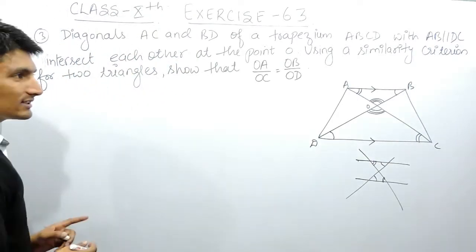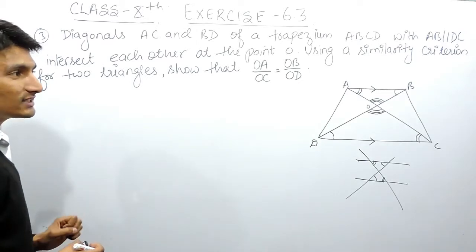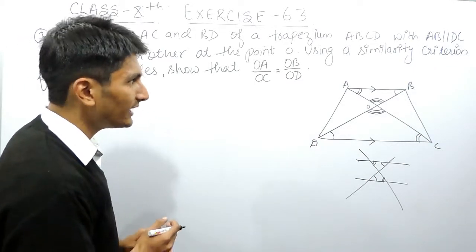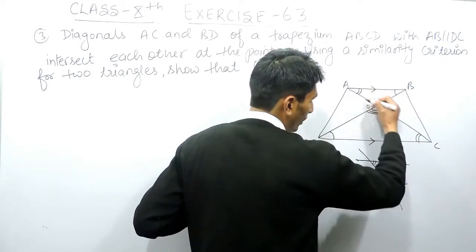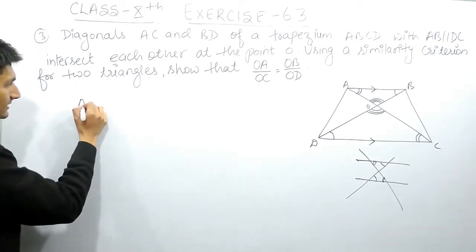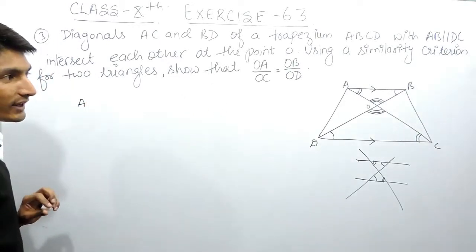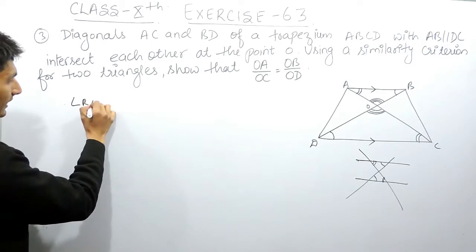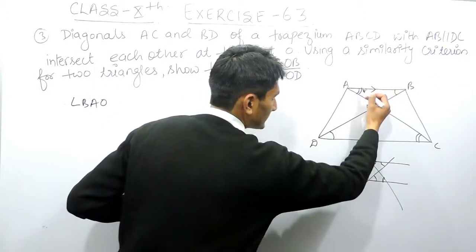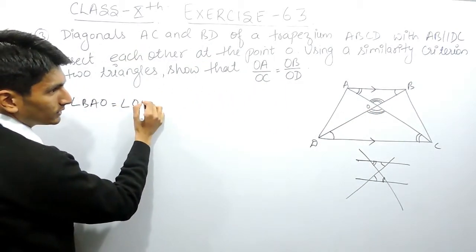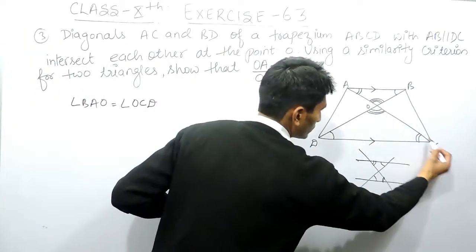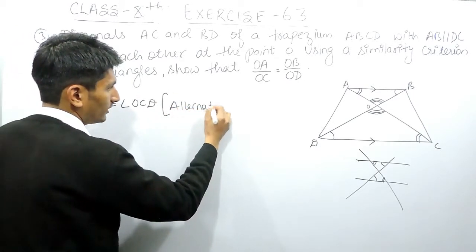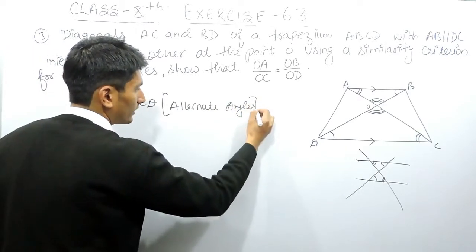Now, we know that if two triangles are similar, their corresponding sides must be in equal ratios. To write the formal proof: angle BAO is equal to angle OCD — these two angles are equal because of alternate angles, and we know that in parallel lines, alternate angles are equal.